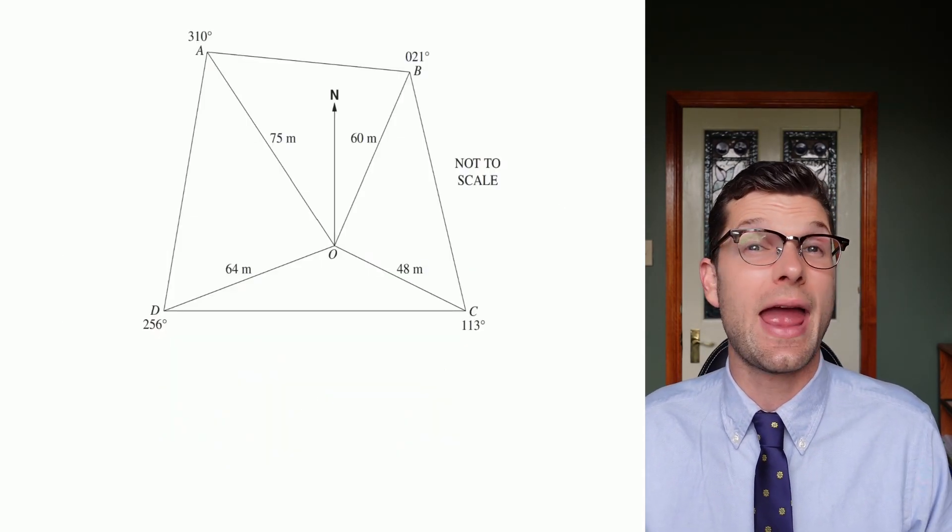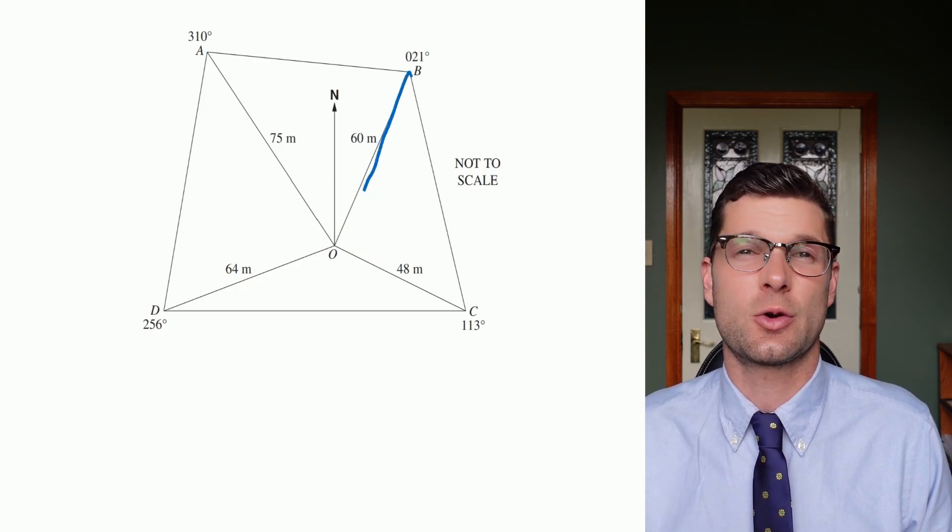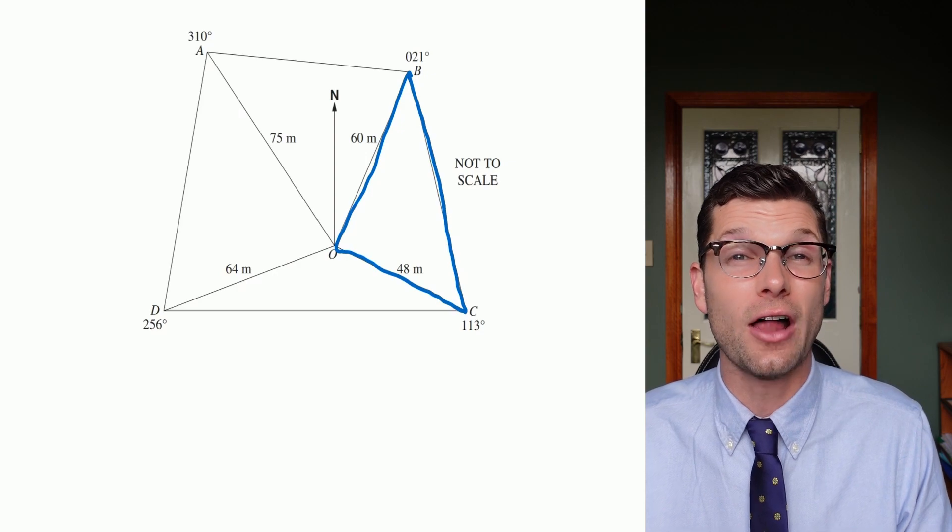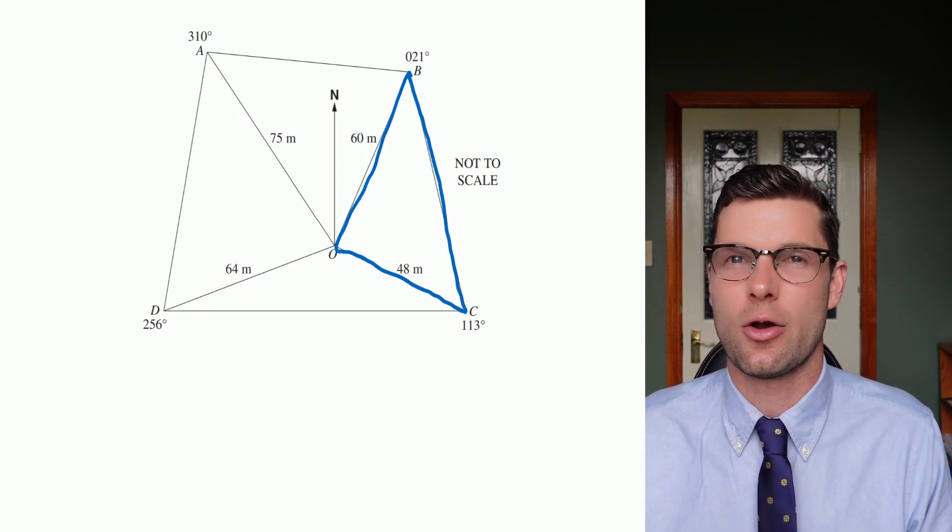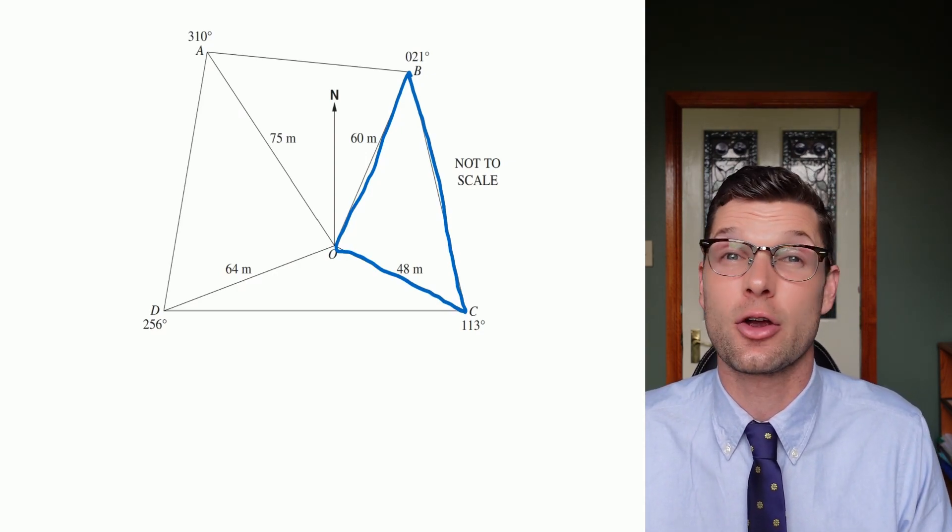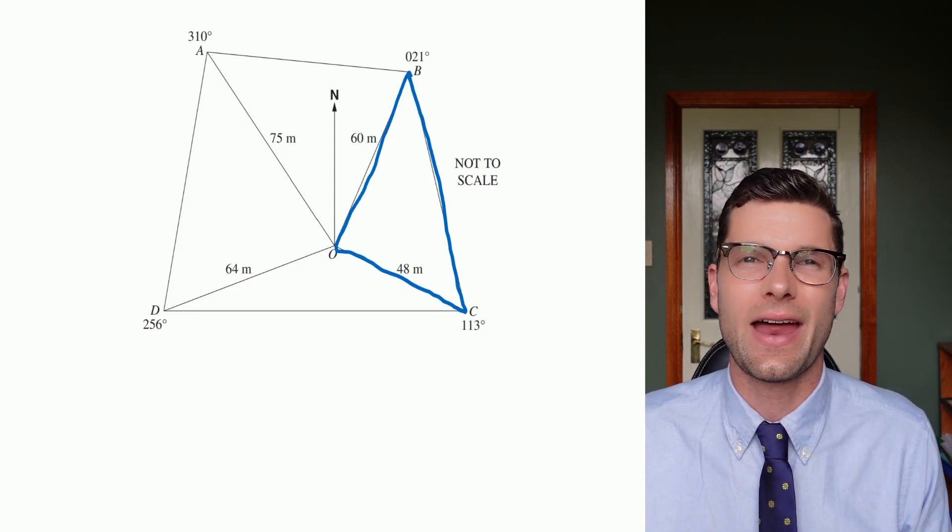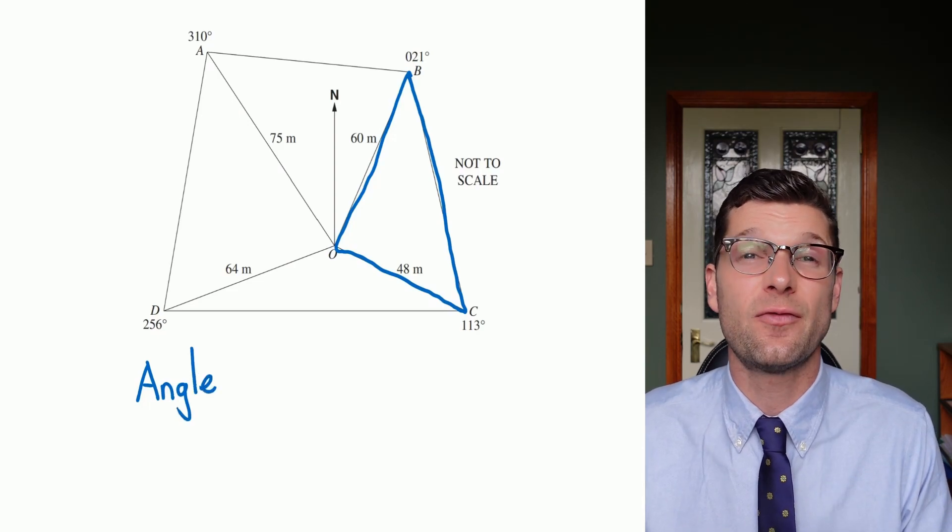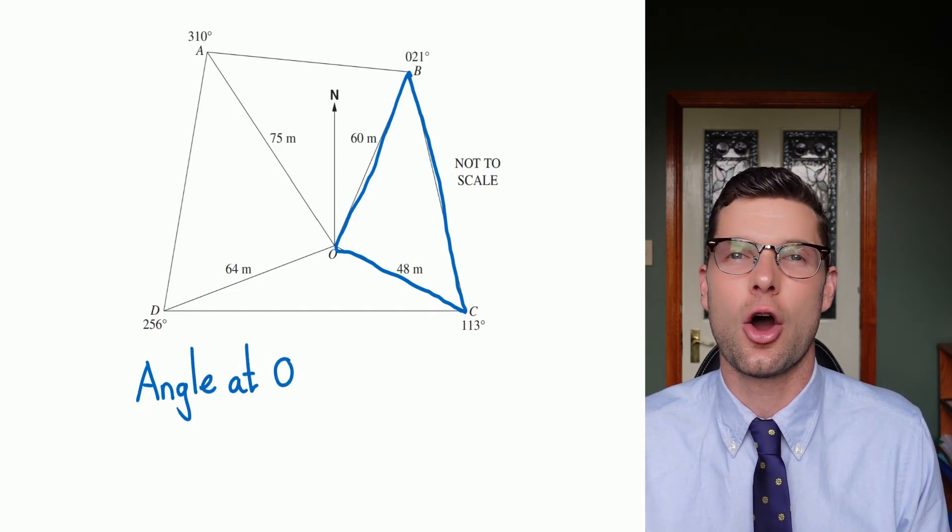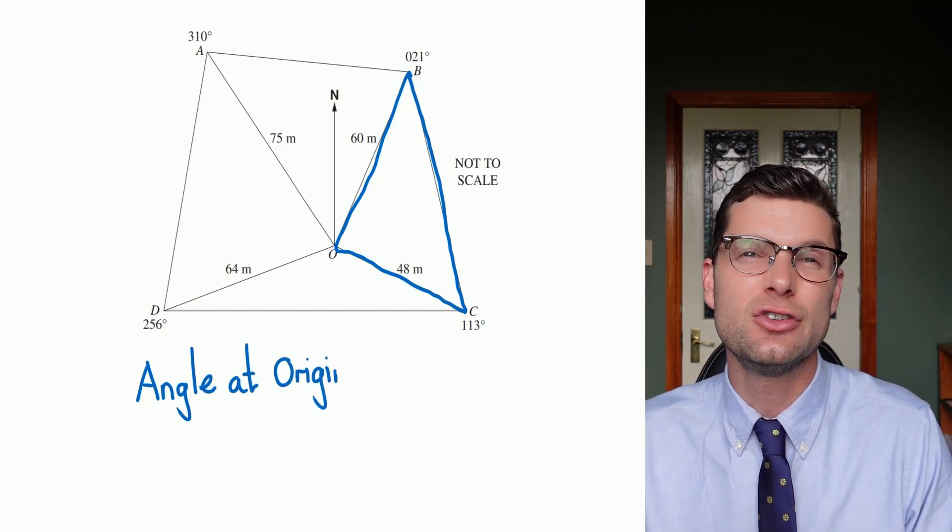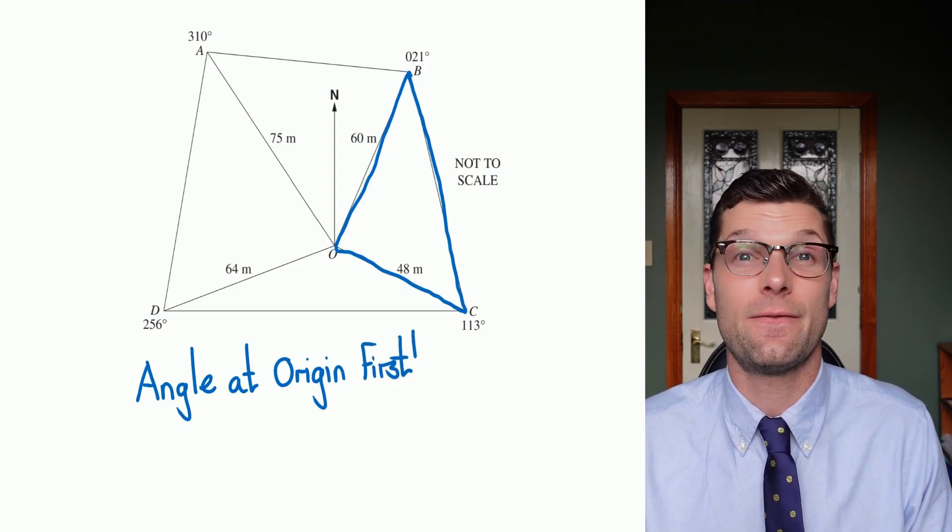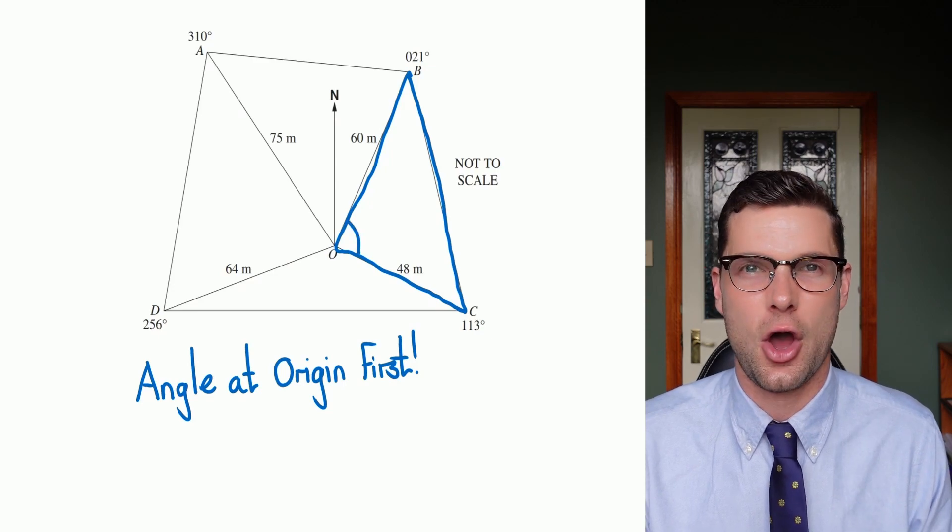The first thing I do any time I attack one of these questions, if there's multiple triangles that could be drawn, I would just highlight the triangle that I'm talking about straight away. So we're talking about the triangle BOC, and I'm going to put that in immediately. The first thing you want to do for these types of questions always is find the angle that's around the origin immediately. If you don't have this angle in there, you can't do any of the maths. So that's our first point of call every single time.